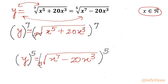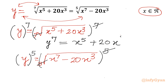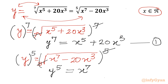We can easily cancel the 7th root with power 7, and the 5th root with power 5. The resulting equations are: equation 1 — y⁷ equal to x⁵ plus 20x³, and equation 2 — y⁵ equal to x⁷ minus 20x³.